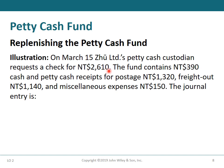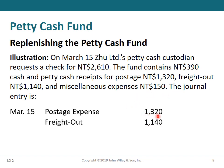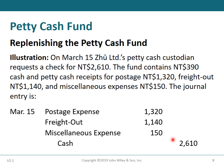If we add $2,610 plus $390, the total is $3,000. So the journal entry for replenishing is: Postage Expenses $1,320, Freight Out $1,140, Miscellaneous Expenses $150, and Cash credit $2,610. Adding $2,610 plus the balance of $390 gives the total of $3,000.